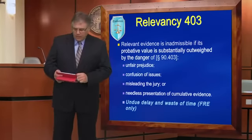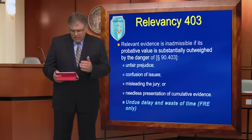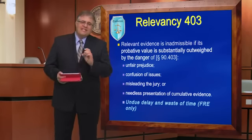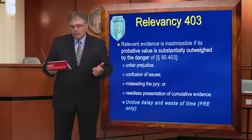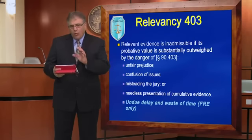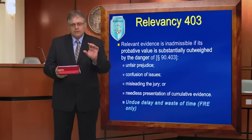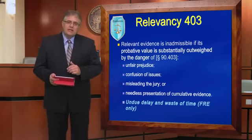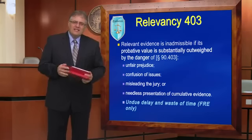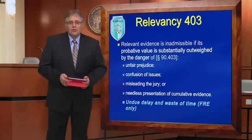This first slide outlines the elements of relevancy in a Florida court. You'll notice that there's only one that is different when it comes to the Federal Rules, and that's the last one at the bottom — undue delay and waste of time. Otherwise, I'm always doing the balancing test between the probative value and the substantial danger of unfair prejudice, confusion of the issues, misleading of the jury, or needless presentation of cumulative evidence. This is the classic 403 balancing test — it's the last refuge of scoundrels when objecting in court.